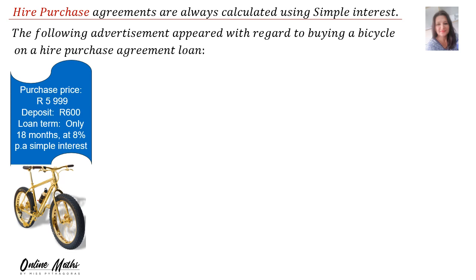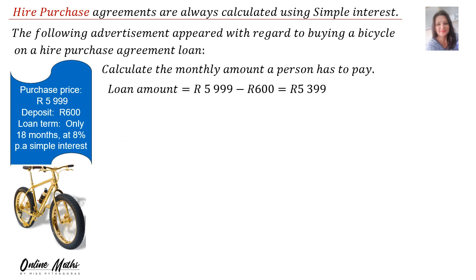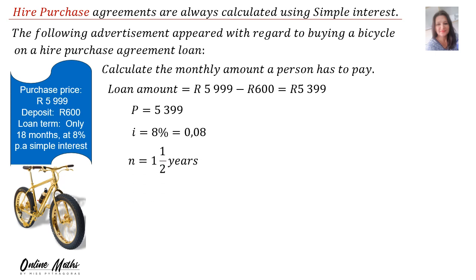Calculate the monthly amount a person has to pay. The loan amount is the purchase price of R5,999 minus the R600 deposit. Therefore the loan amount is R5,399. Summary: P = R5,399, i = 8% = 0.08, and n = 1.5 years.